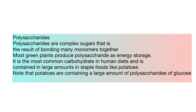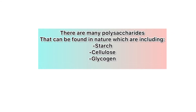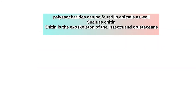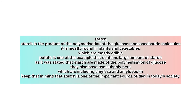Polysaccharides are complex sugars that result from bonding many monomers together. Most green plants produce polysaccharides as energy storage — it is the most common carbohydrate in human diets, contained in large amounts in staple foods like potatoes. Polysaccharides found in nature include starch, cellulose, and glycogen. They can also be found in animals, such as chitin, which forms the exoskeleton of insects and crustaceans.